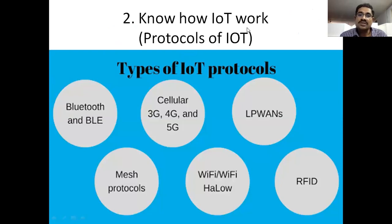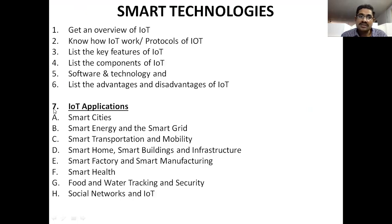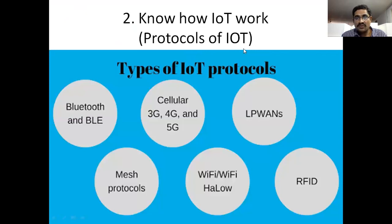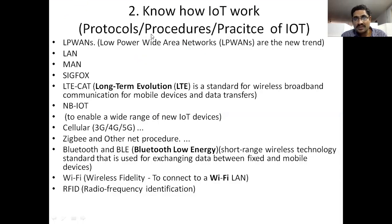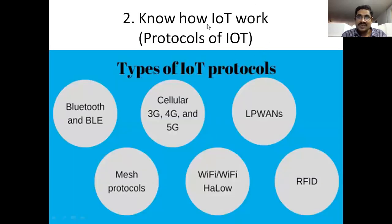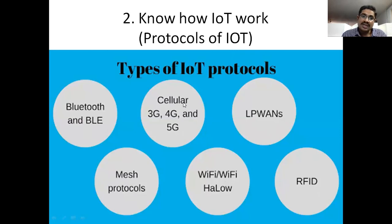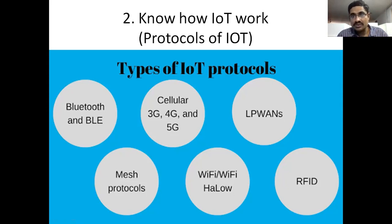How IoT works — the protocol or procedures of IoT. Protocol is also known as procedures or practices of IoT. Types of protocols include: Bluetooth, Mesh Protocol, Wi-Fi, RFID, LPWAN, and Cellular in mobiles — 3G, 4G, and 5G. By using these different types of technologies, we can transfer our data, connect to other devices, and transfer data to those devices.